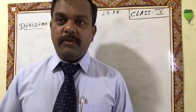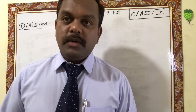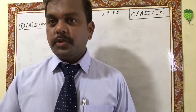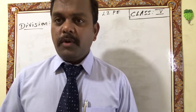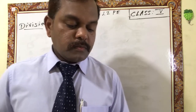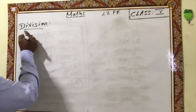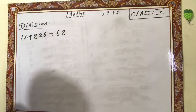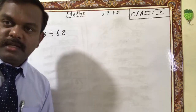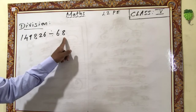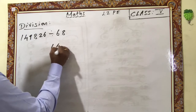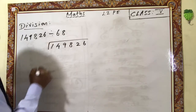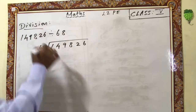Hello students, this is your fifth video of lesson two. In this video we are going to learn about large number division — division of large numbers by three-digit numbers and two-digit numbers. Some story sums also we can see. But first, from your book exercise, I will give one example: 1,49,826 divided by 68. This is the dividend and this is the divisor.